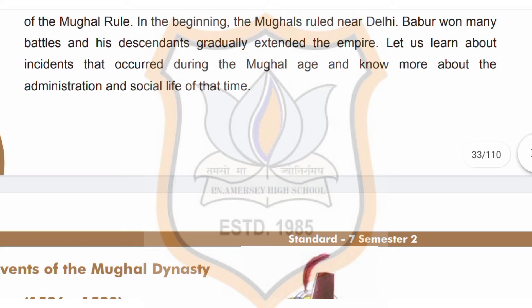In the beginning, the Mughals ruled near Delhi. Babur won many battles and his descendants gradually extended the empire. Let us learn about incidents that occurred during the Mughal age and know more about the administration and social life of that time.